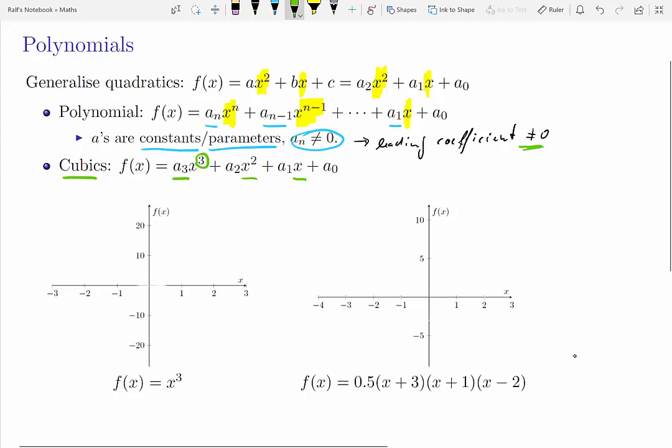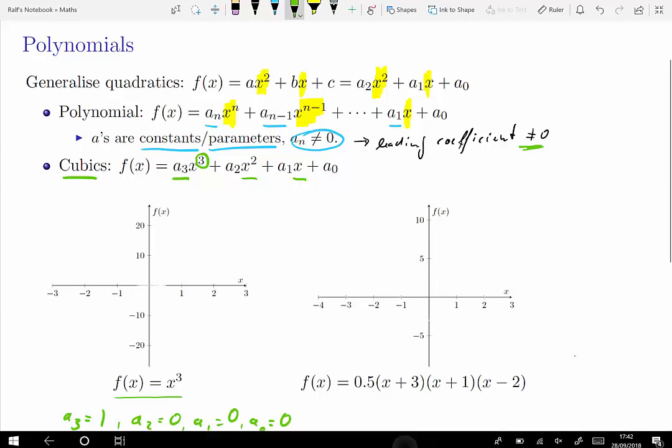Let's look at a particular cubic function, that's the one here on the left hand side, f of x is equal to x to the power of 3. So that means our a3 coefficient is equal to 1 and all our coefficients a2, a1, and indeed a0 are equal to 0. That makes this very simple form.